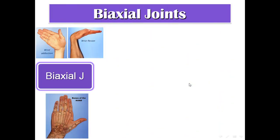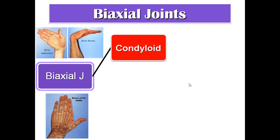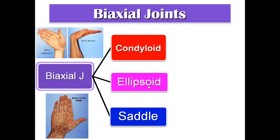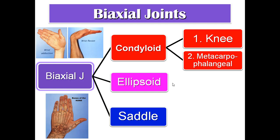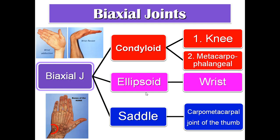Biaxial joints: movements occur around two axes. We have three types — condyloid (there is a condyle in the articular surfaces), ellipsoid (the articular surface is elliptical), and saddle (some rotation with biaxial movement). Condyloid examples: knee joint and metacarpophalangeal joint. Ellipsoid example: wrist joint. Saddle example: carpometacarpal joint of the thumb.